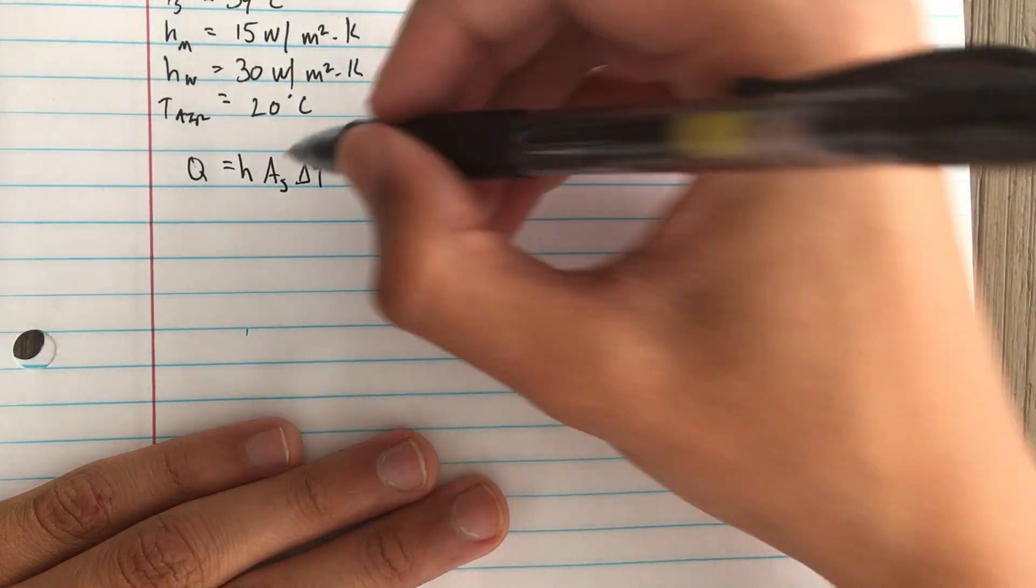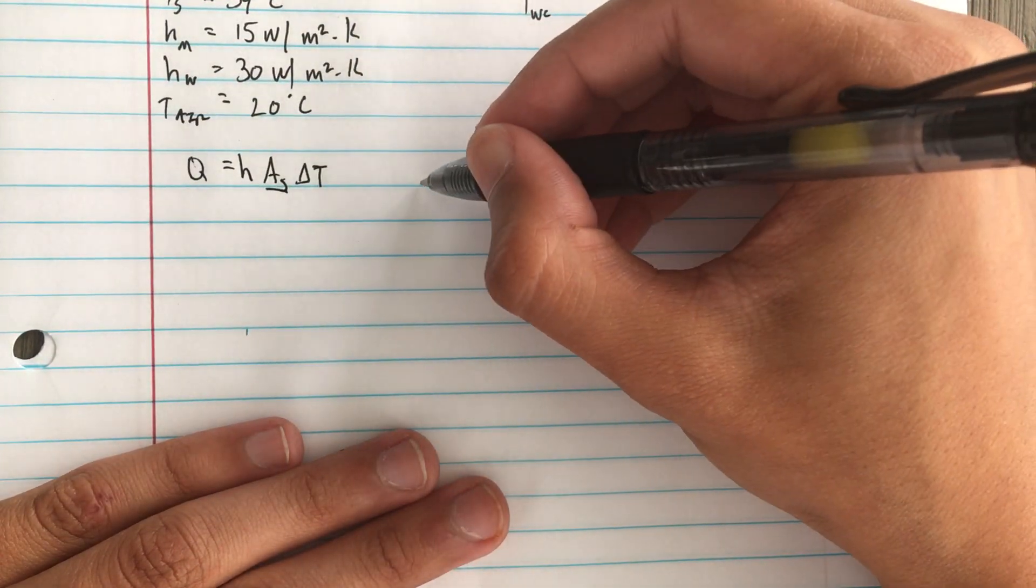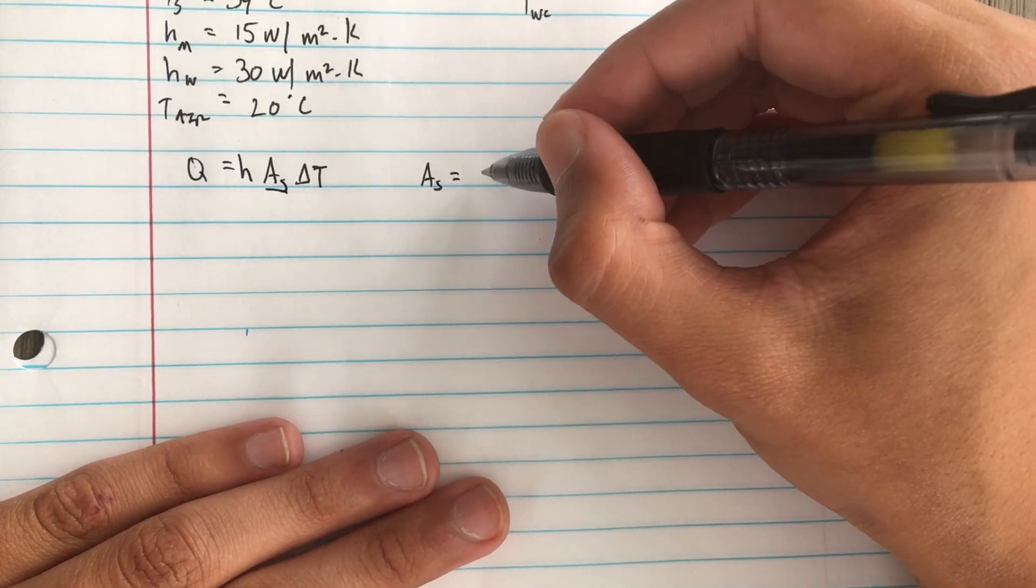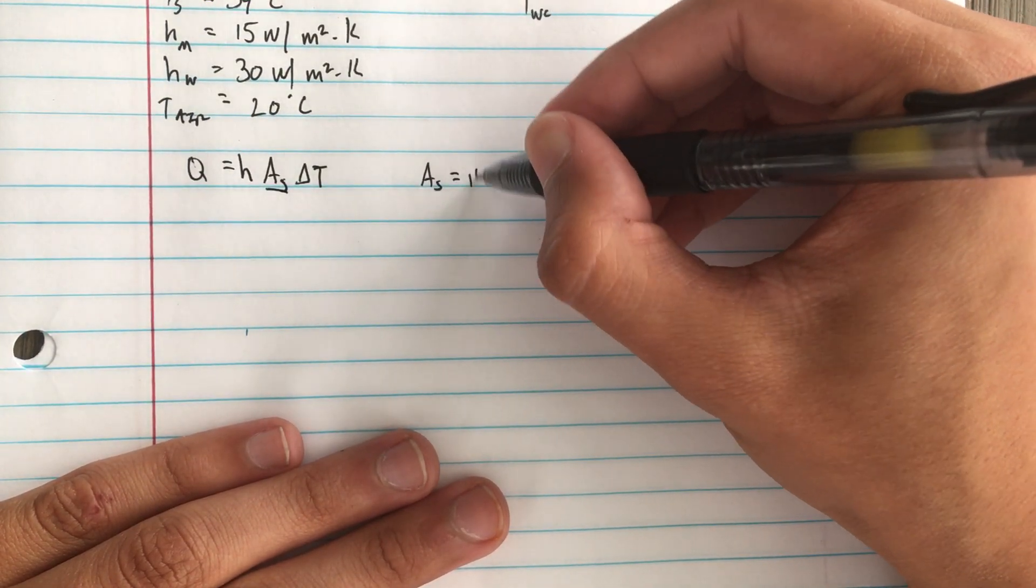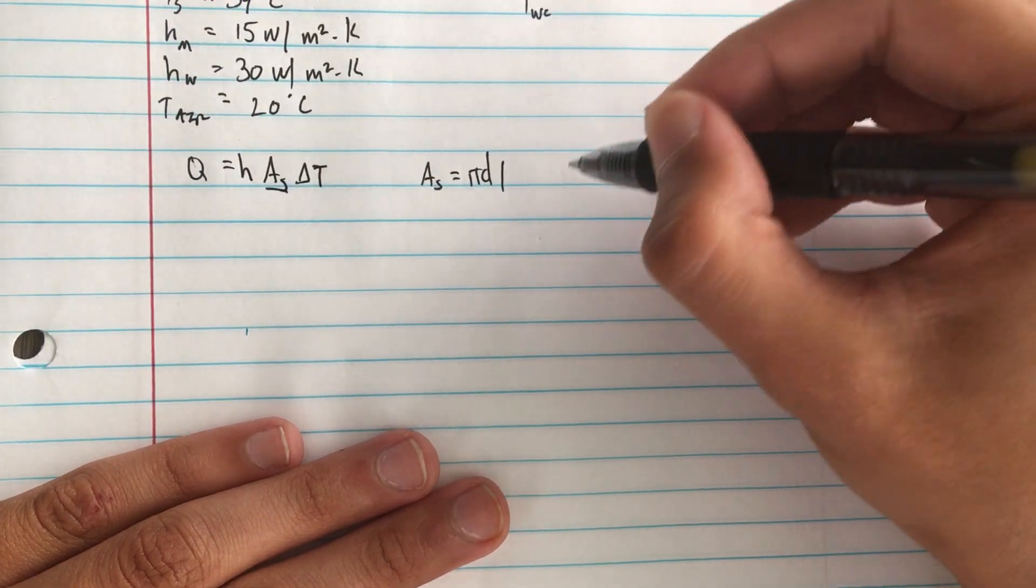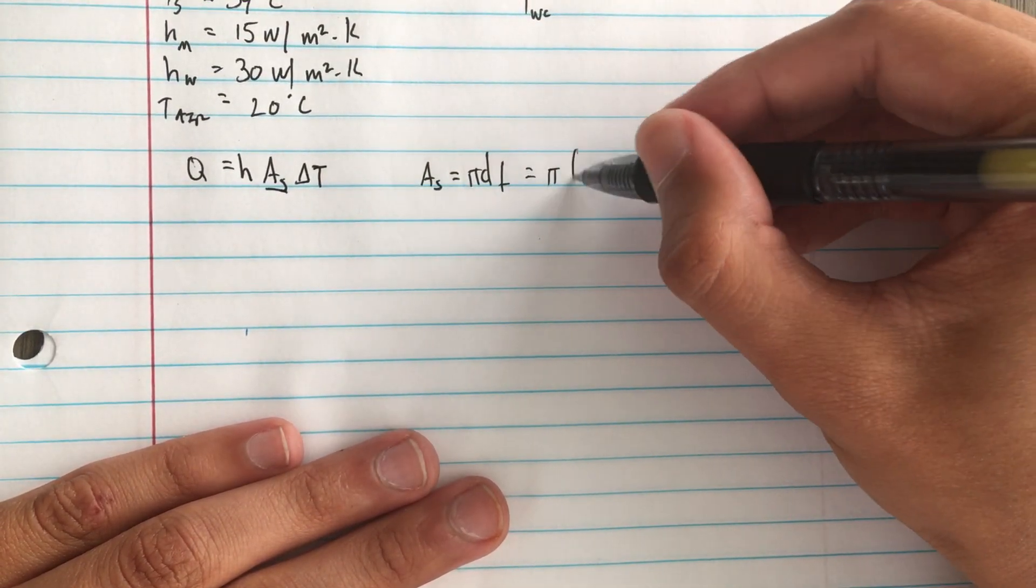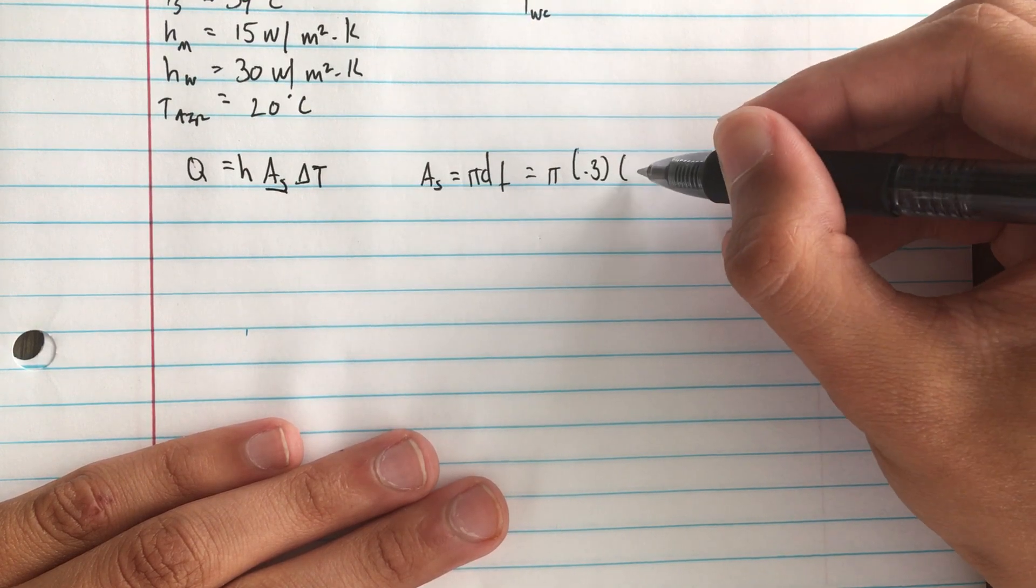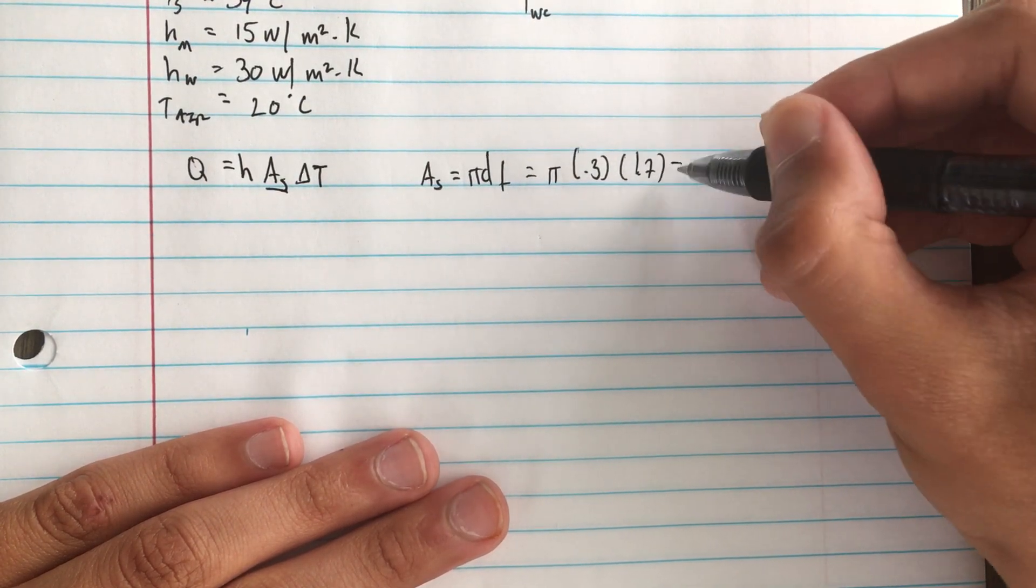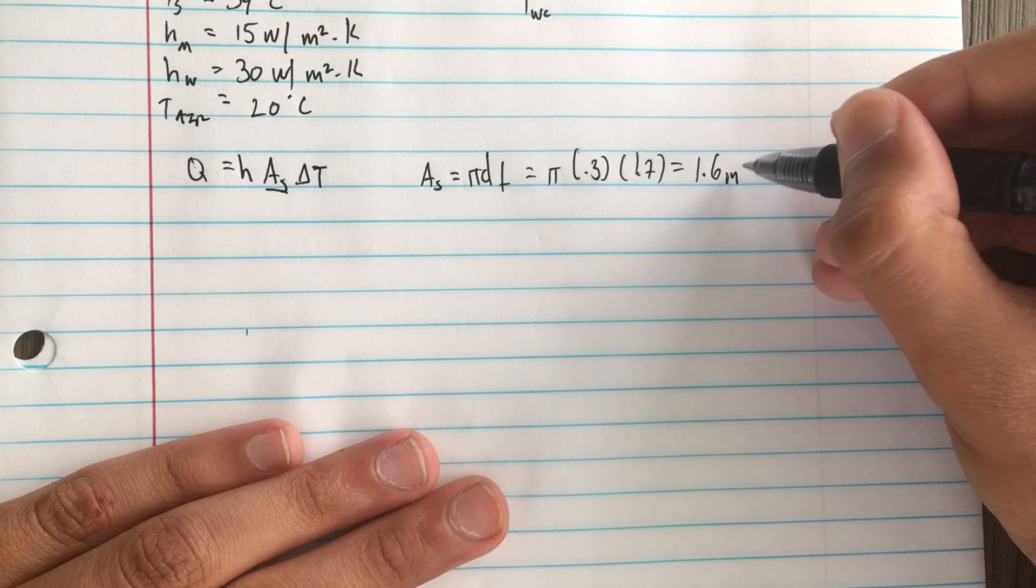But first we need to find As, the surface area, which would be pi D L for this case. So that's pi times 0.3 times 1.7, and that gives us 1.6 meters squared.